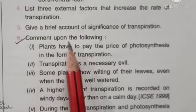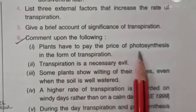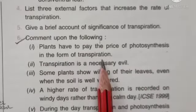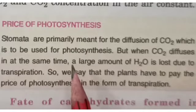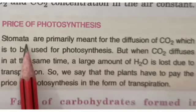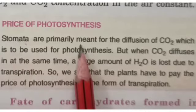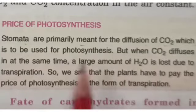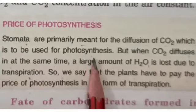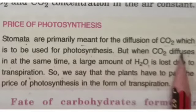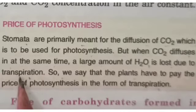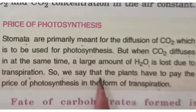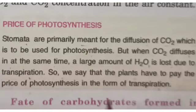Next question: comment upon the following. 'Plants have to pay the price of photosynthesis in the form of transpiration.' Stomata are primarily meant for the diffusion of carbon dioxide, which is to be used for photosynthesis. But when carbon dioxide diffuses in, at the same time a large amount of water is lost due to transpiration. So we can say that plants have to pay the price of photosynthesis in the form of transpiration.